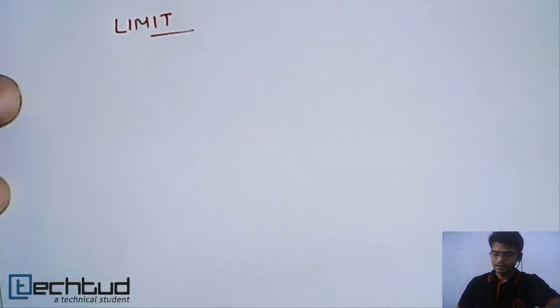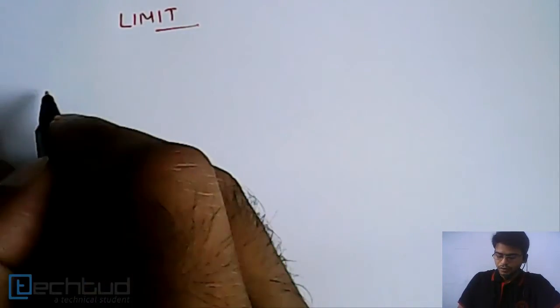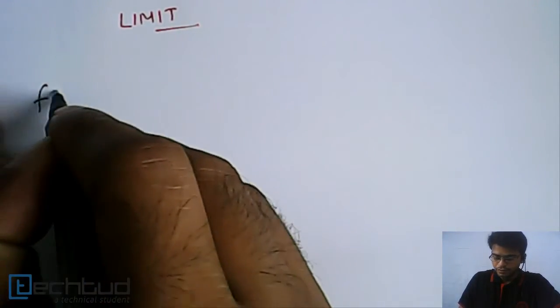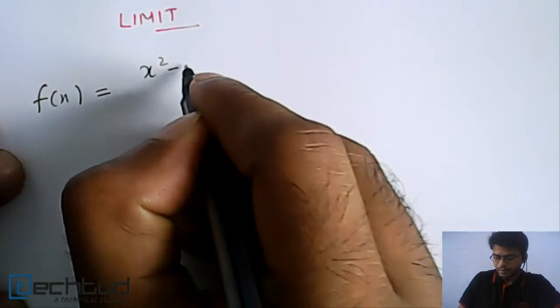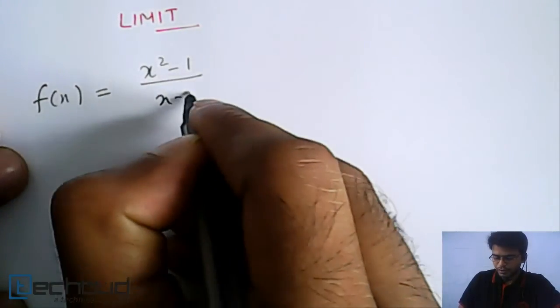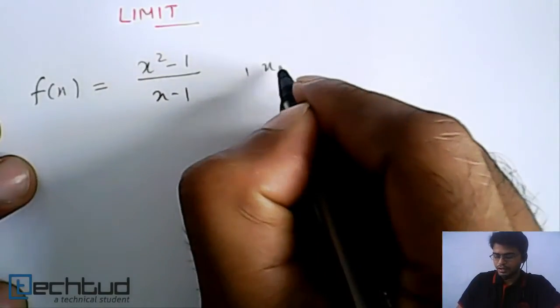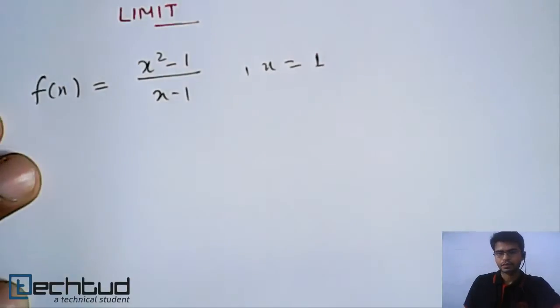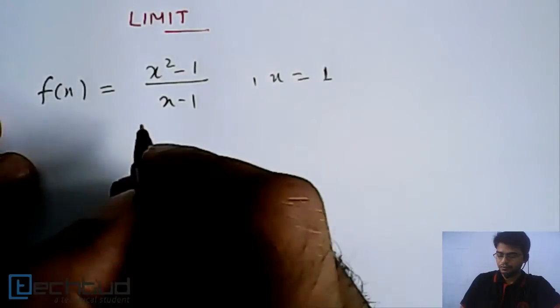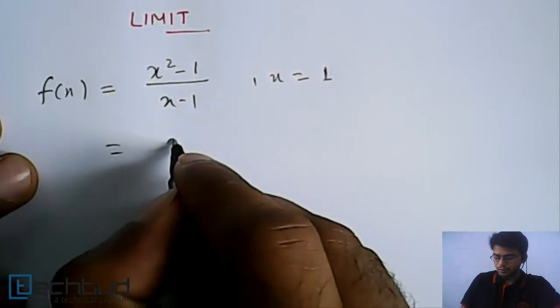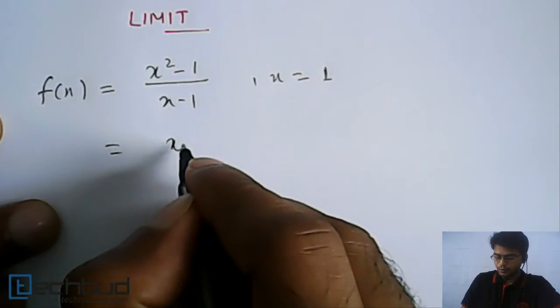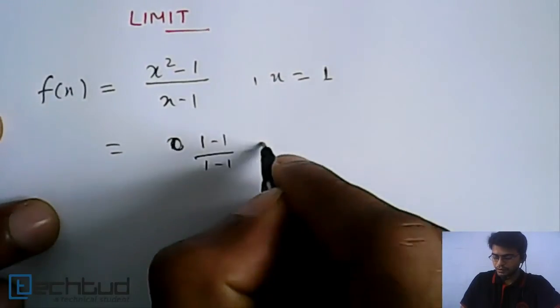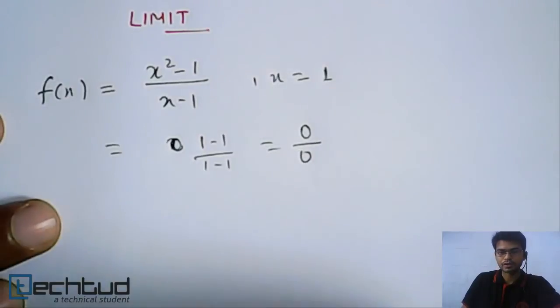So what do we understand by limit? If somebody asks what is the value of this function f(x), which is x squared minus 1 upon x minus 1 at point x equal to 1. So let's put the value of 1, which will be equal to 1 minus 1 upon 1 minus 1, which is 0 upon 0, right?